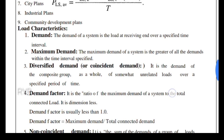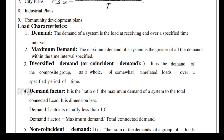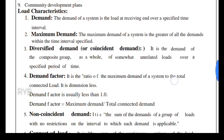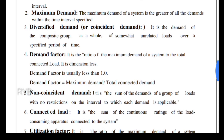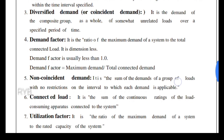Maximum demand is the greatest demand that occurs over a specified period of time. The demand factor is the ratio of maximum demand of the system to the total connected load — it is dimensionless and is usually less than one. Demand factor equals maximum demand divided by total connected load.